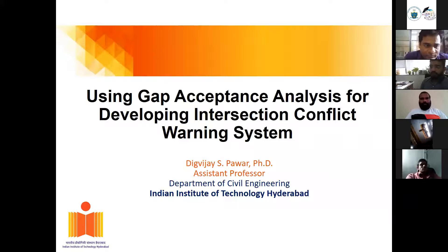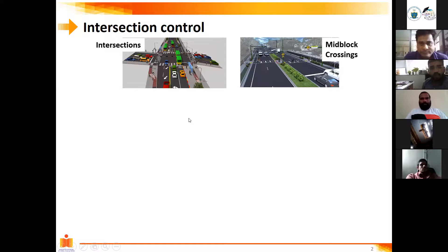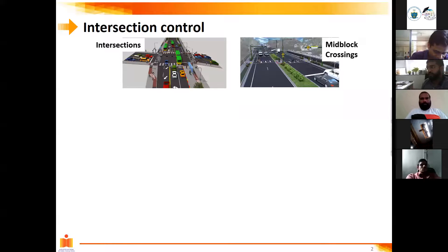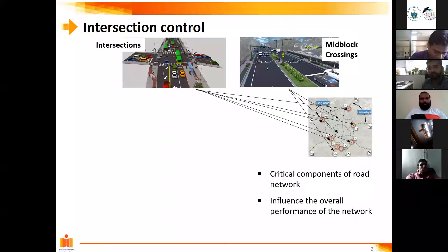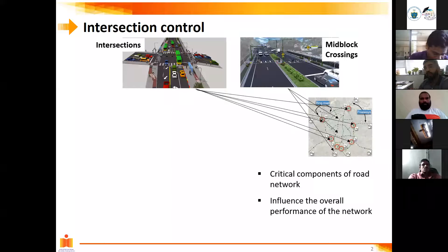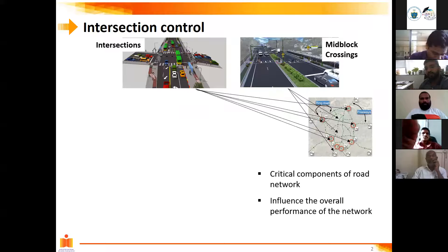As you all know, especially intersections and mid-block crossings are critical components of any road network. This is because they influence the overall performance of the network. When you talk about the performance of the network, we talk about level of service, safety aspects, and how comfortable the riders are commuting on the given road — that is what we mean by performance of the network.